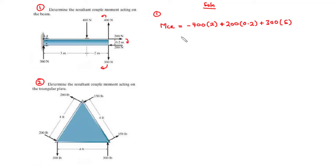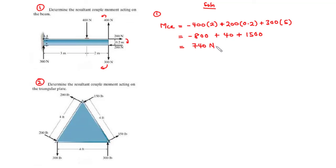Simplifying: negative 400 times 2 equals negative 800. 200 times 0.2 equals 40. 300 times 5 equals 1500. Negative 800 plus 1500 is 700, plus 40 gives 740 Newton meters. Since we have a positive value, the resultant couple moment acts in the clockwise direction: MCR equals 740 N·m clockwise.